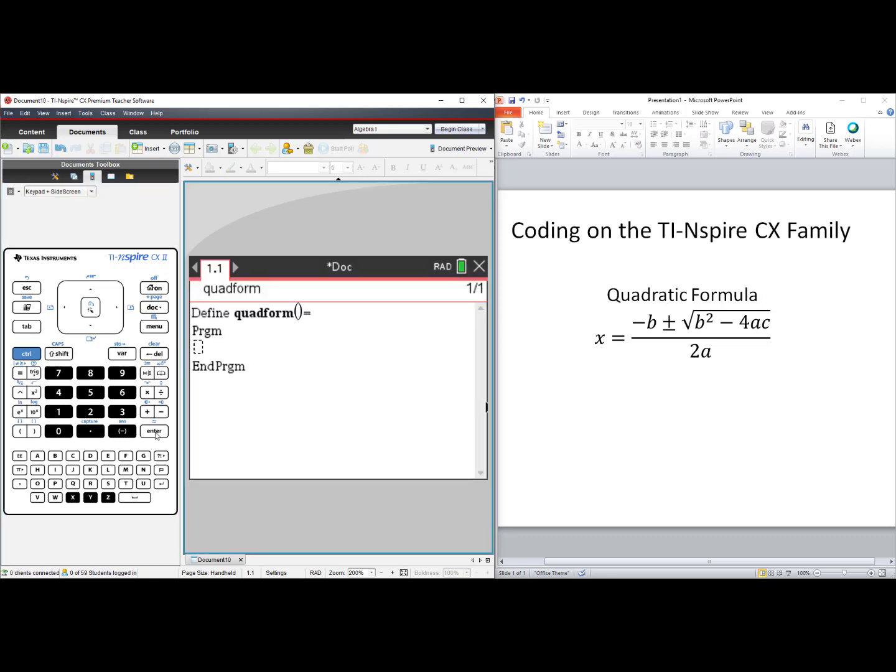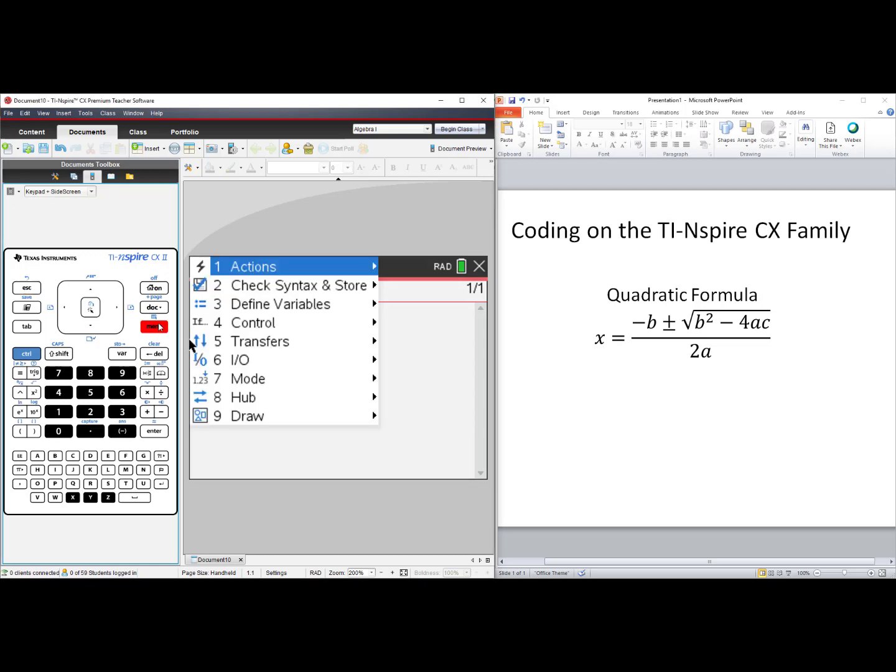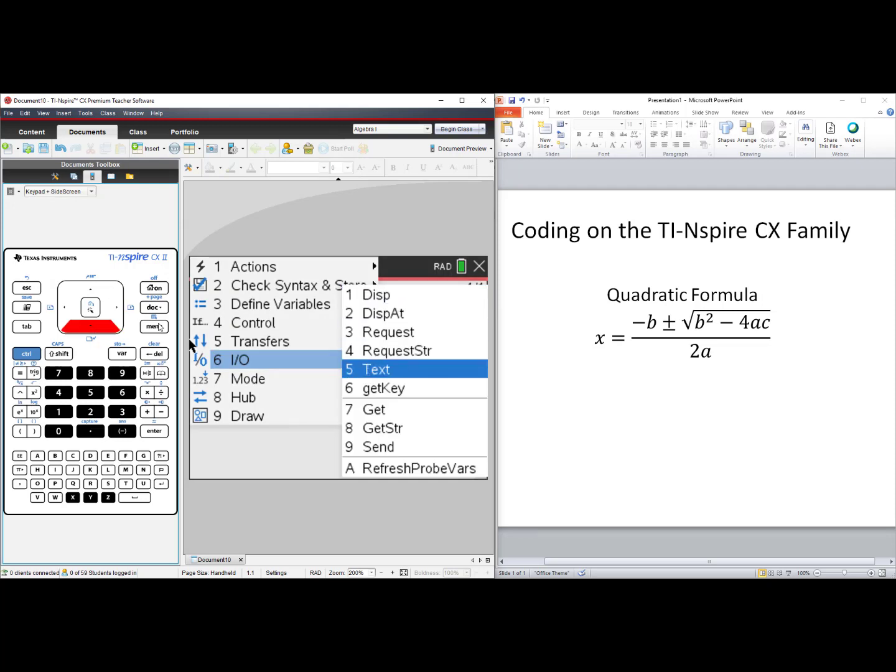We are now in the body of our code. We want to create a line of code so the user knows how to use this program. Press Menu, choose number 6, Input Output, and select number 5, Text.